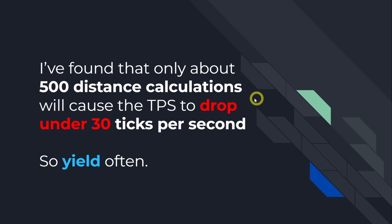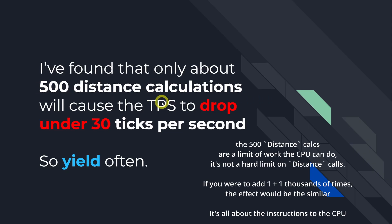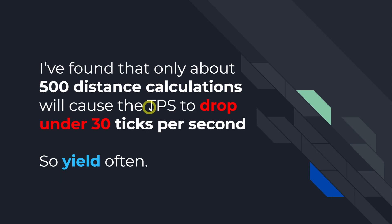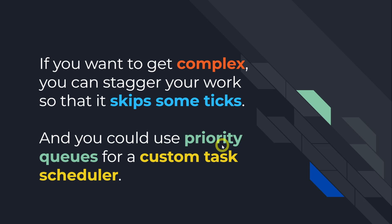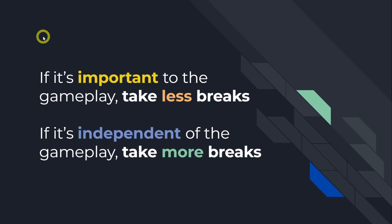I've found personally that about 500 distance calculations will cause the ticks per second to drop under 30, so yield often. If you want to get more complex, you can stagger your work so that it's skipping some ticks — maybe do ticks 0 and 5, and another task works on 1 and 6, and so on. You could also use priority queues if you really want to get into the weeds for a custom task scheduler that manages all the tasks. Personally, I'd fall back on: if it's important, take less breaks; if it's independent, take more breaks.